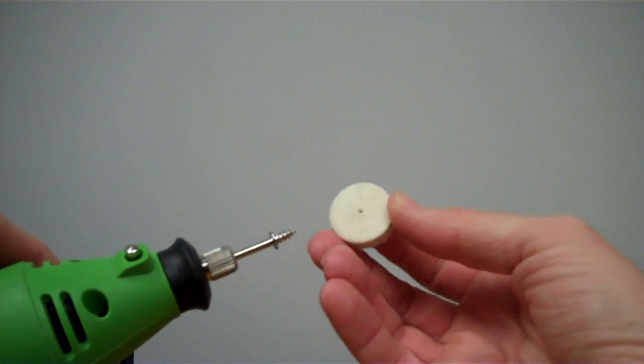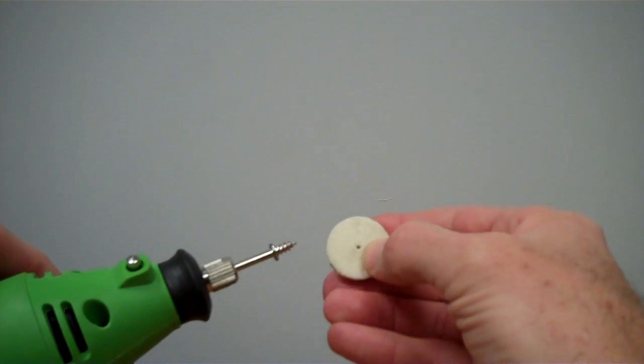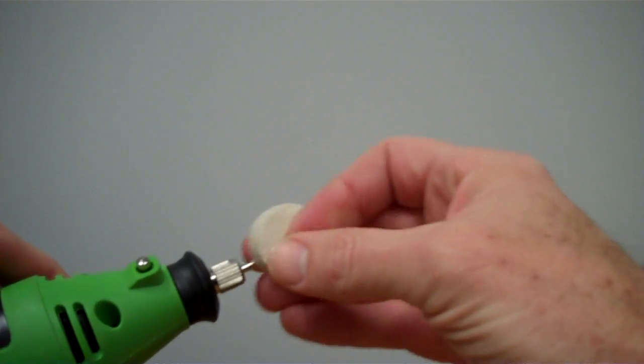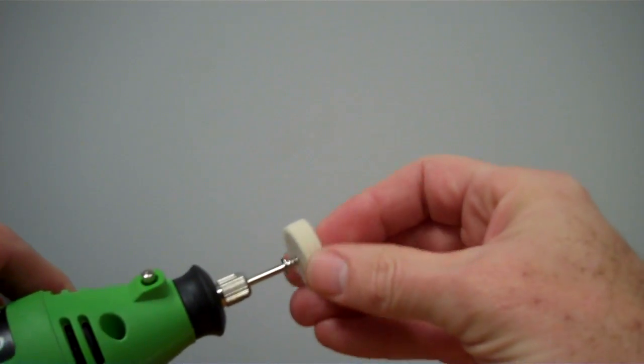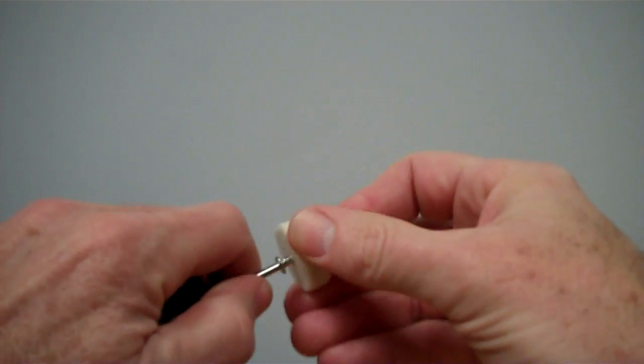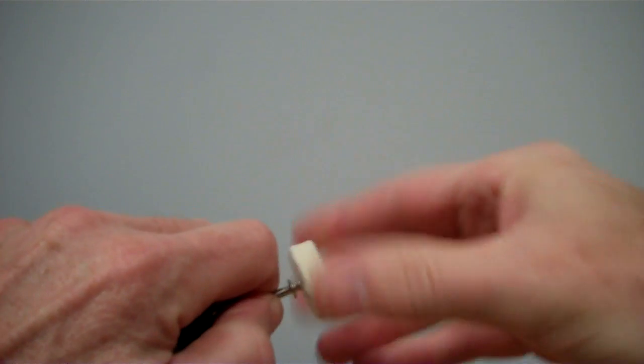So basically, you very simply line that hole up in the center of the wheel and then just thread it onto that screw on the end of the mandrel.